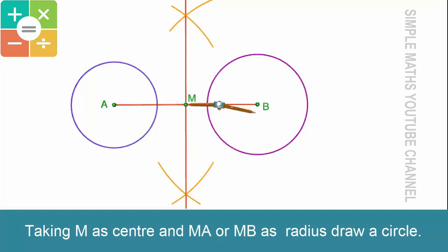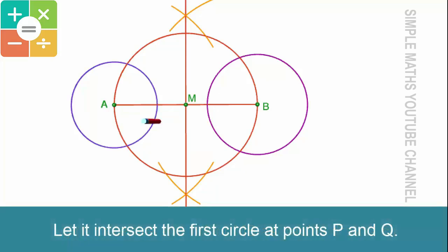Taking M as center and MA as radius, draw a circle. Let it intersect the first circle at points P and Q.